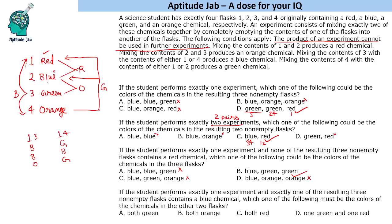Next question: if the student performs exactly one experiment and exactly one of the resulting 3 non-empty flasks contains a blue chemical, which one of the following must be the colors of the chemicals in the other two flasks? Let us find the possibilities. One case is that blue (flask 2) remains intact. We cannot mix 3 and 1 because that would produce another blue, and we cannot mix 3 and 4 for the same reason.